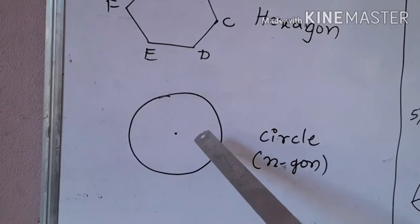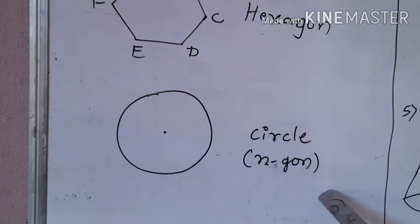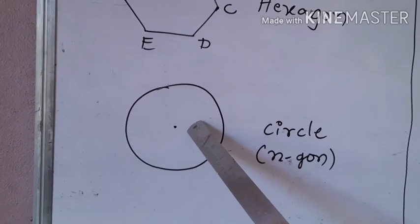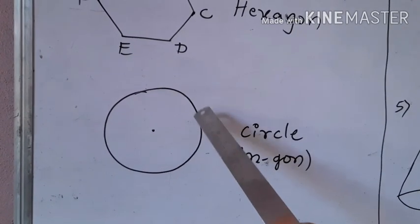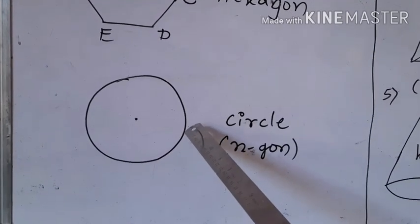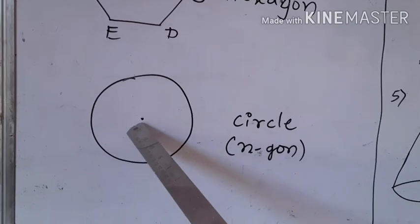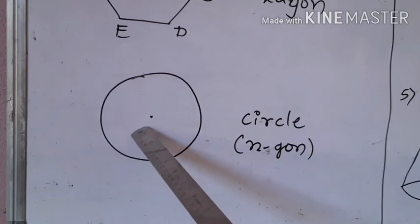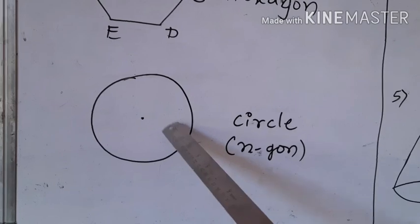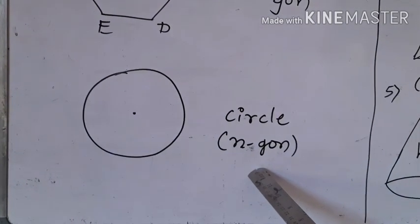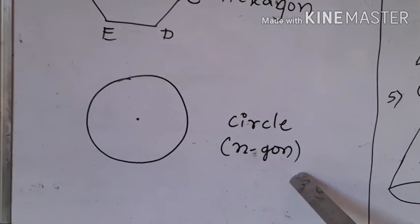Circle is also a closed plane figure — with n number of sides, so I can call it an n-gon. We know that a circle is the collection of points which are at an equal distance from the fixed point called the center. If there are n number of points and each point is considered to be a side, then it becomes an n-gon. So children, circle is also a polygon with n number of sides.